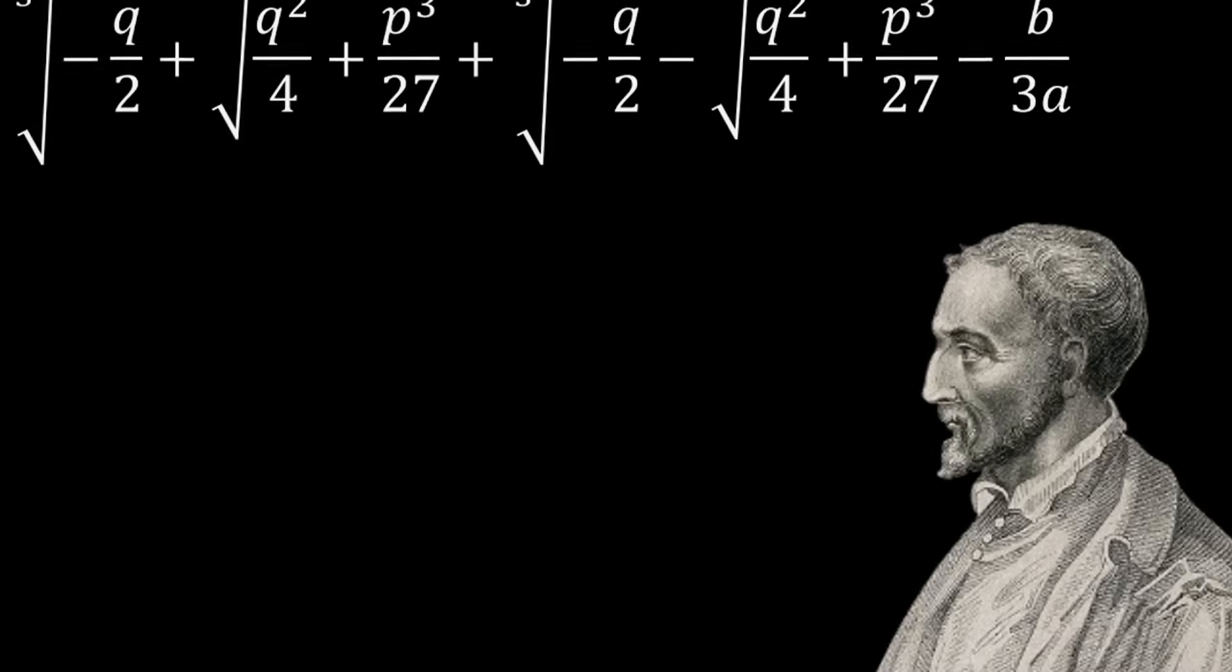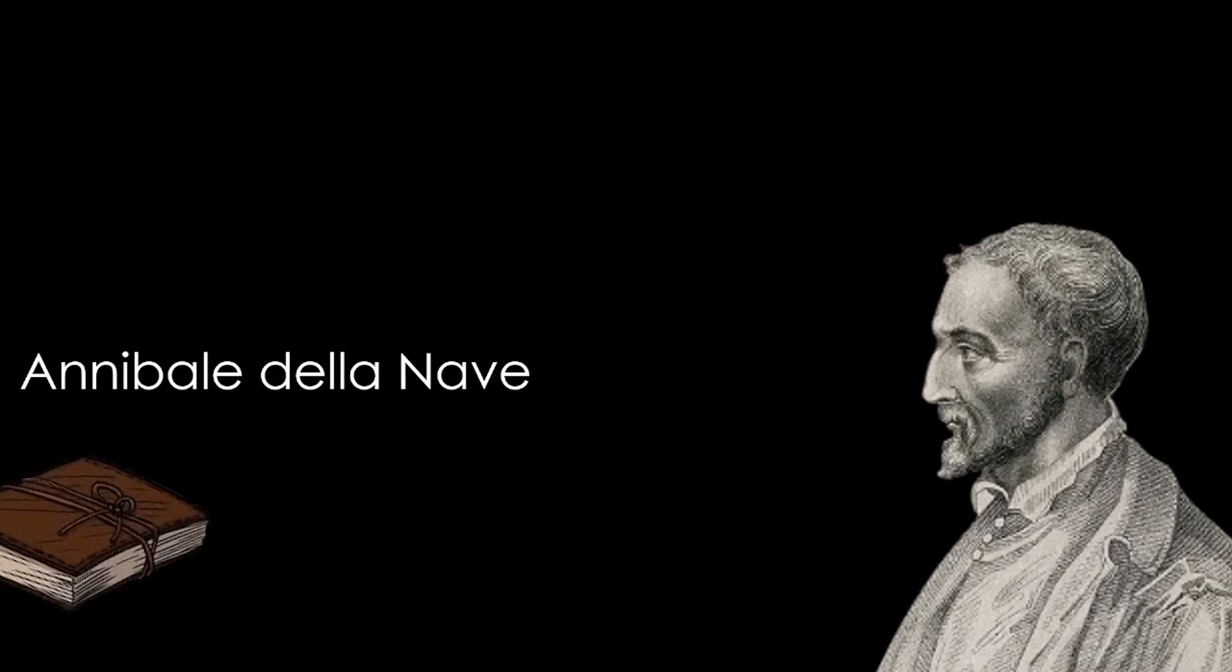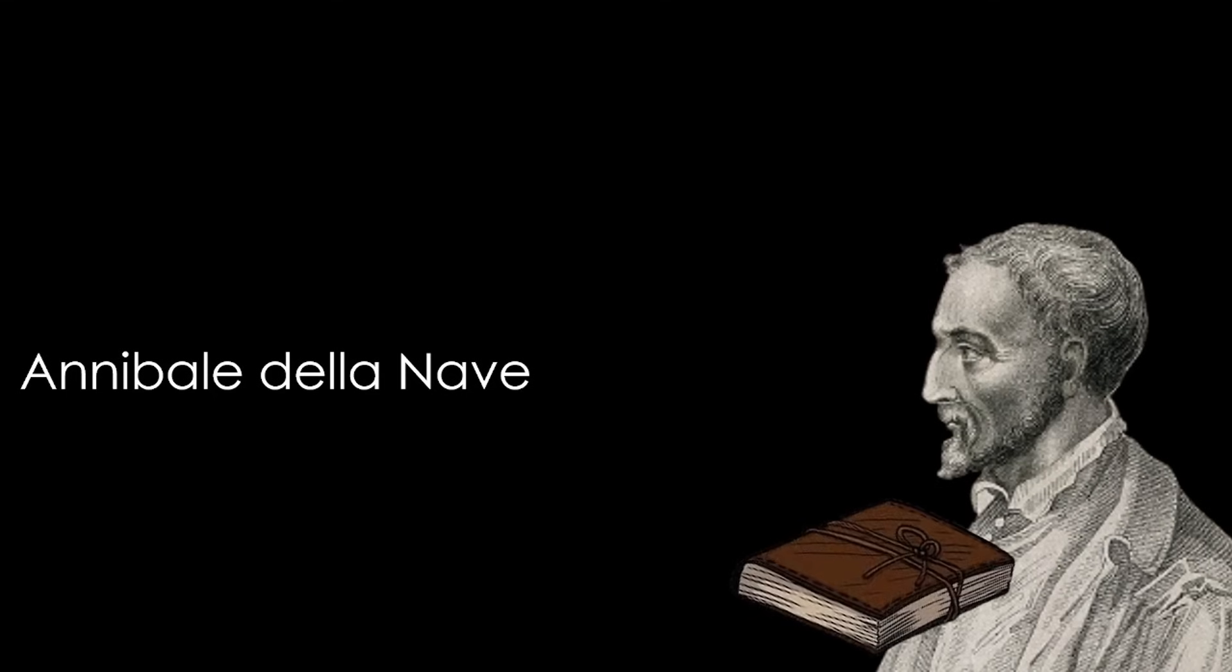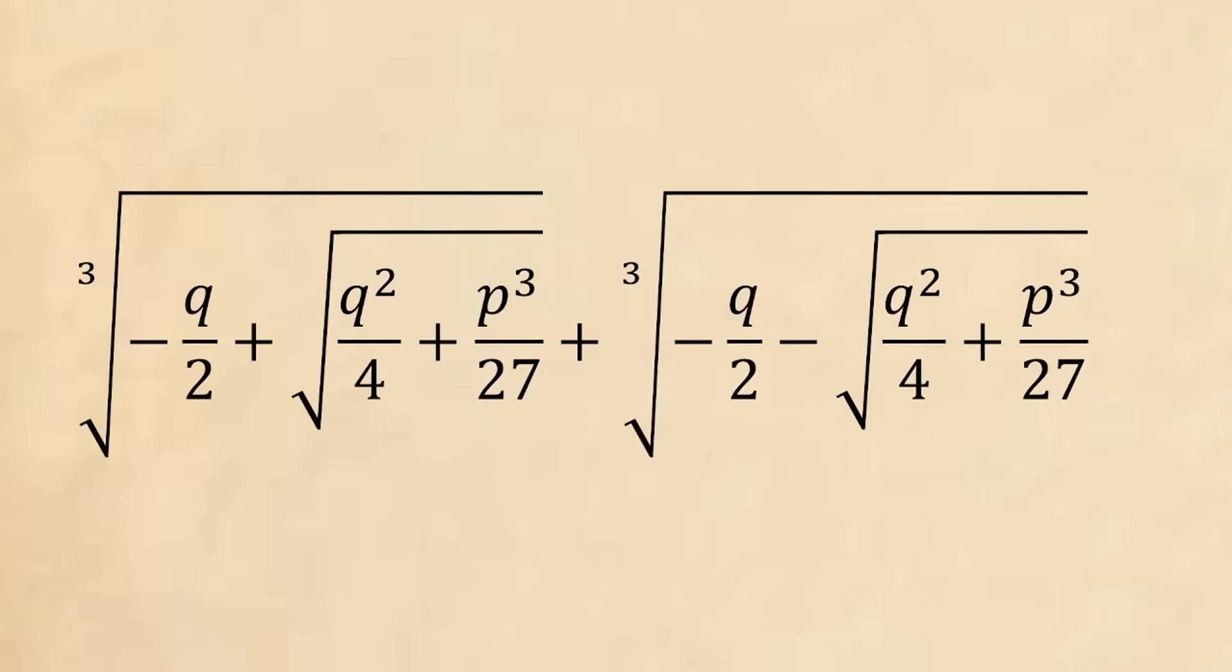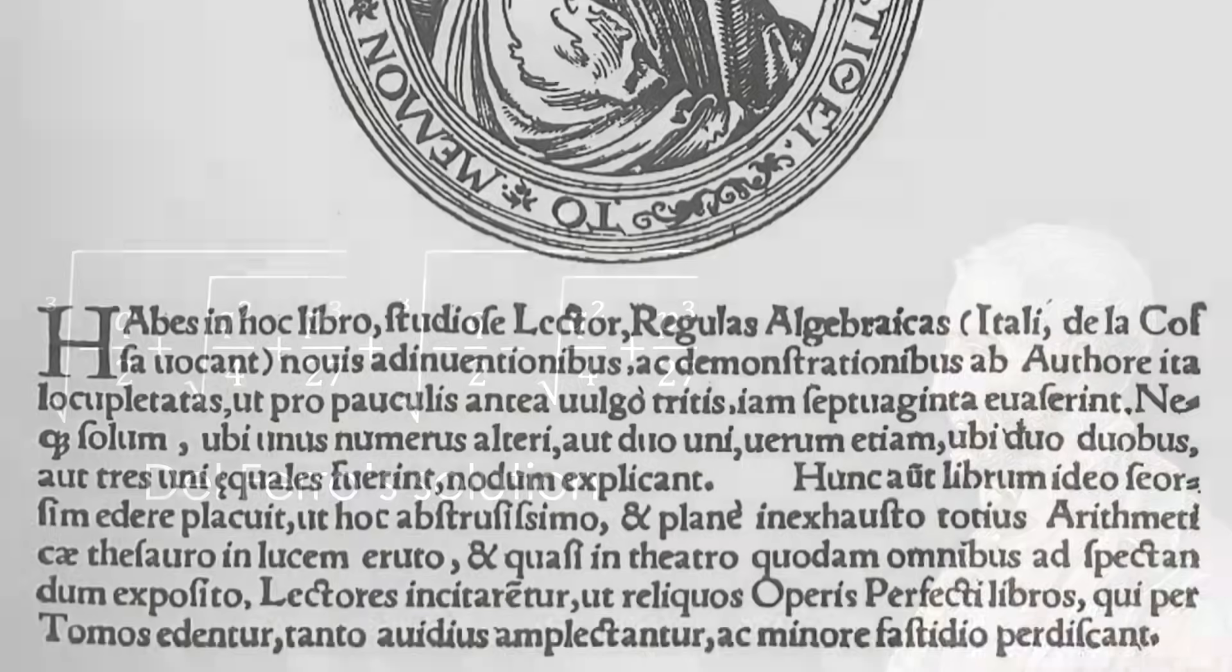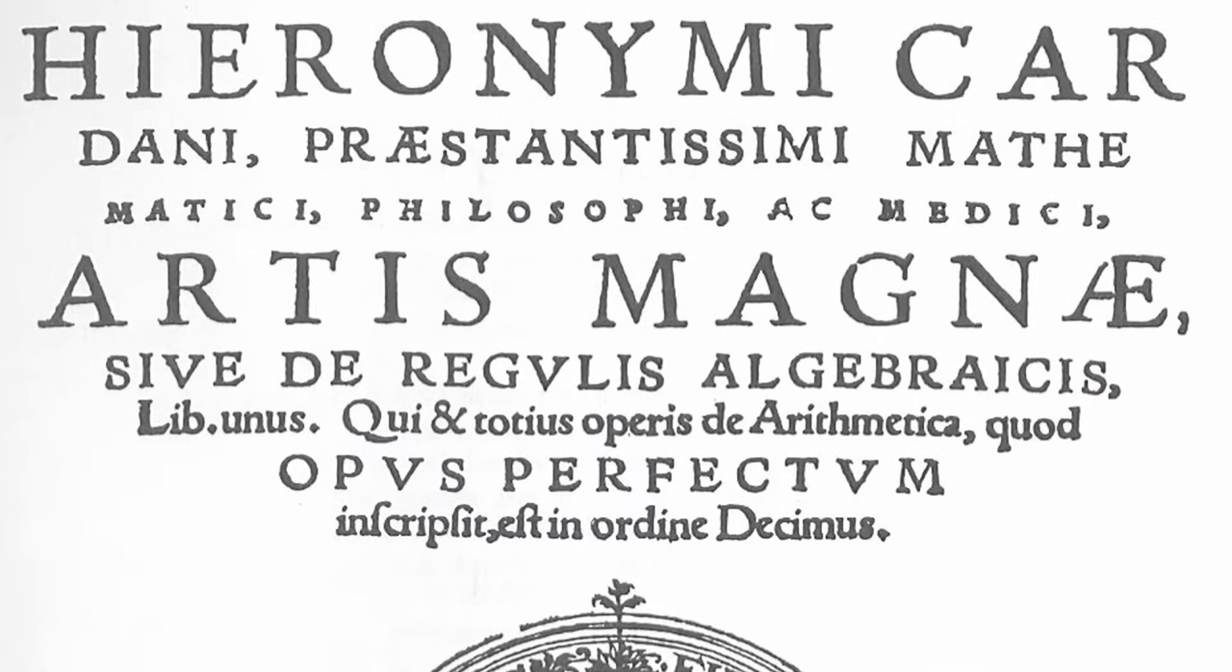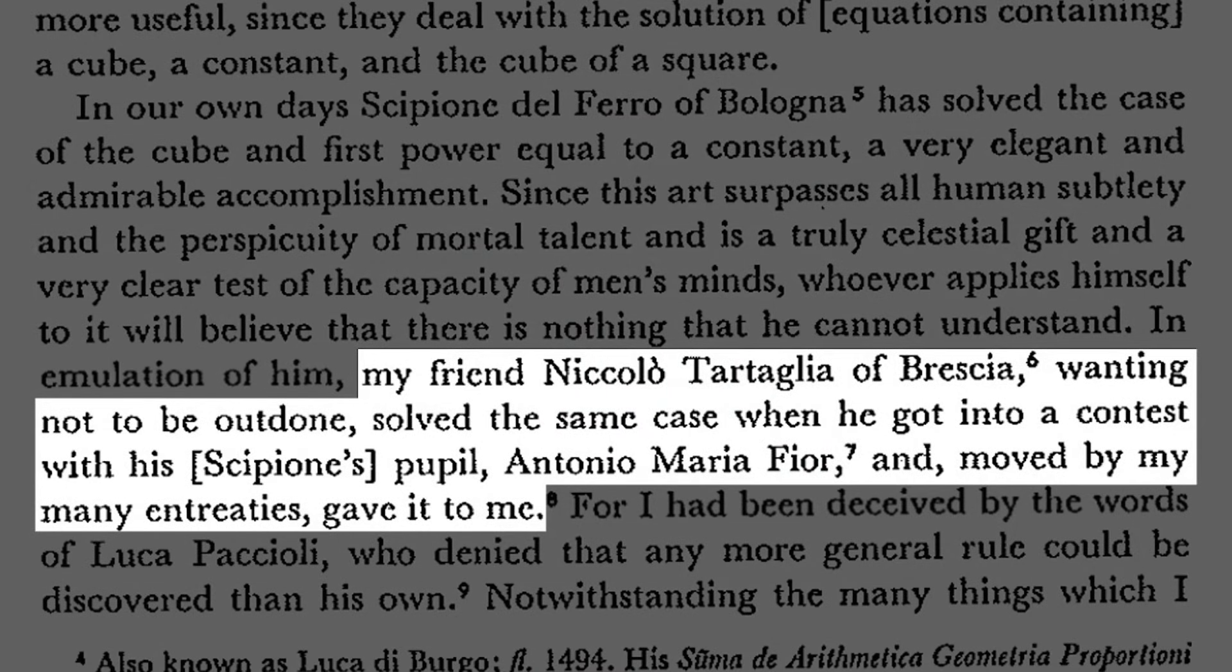Cardano had no need to hide the formula, for his income came from his many other lines of work. One day, however, Cardano visits Bologna, where he meets the son-in-law of Del Ferro, Annabelle della Neve. After some consultation, Cardano is granted access to Del Ferro's old notebooks, where he discovers the same solution for the depressed cubic that Tartaglia had formed. Claiming he was publishing Del Ferro's solution, he published it in his book, Ars Magna. Although Tartaglia is acknowledged in the book, he remained unpleased.